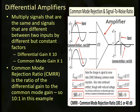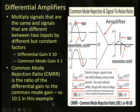We've improved the signal to noise ratio from 0.1 to 1 to 10 to 1 — a significant improvement. That gives us our common mode rejection ratio: the ratio of the differential gain to the common mode gain. In this example, the common mode rejection ratio is 10 to 1.